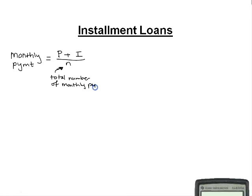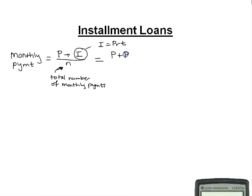This I is the total interest. But if you look at this formula, I should look familiar — this is your simple interest formula. I is equal to P times R times T. So we can replace I in this formula with P·R·T, giving us P plus P·R·T all over the number of monthly payments N.